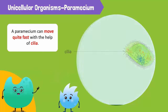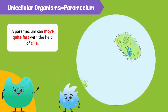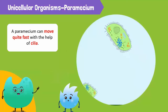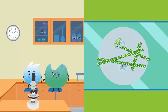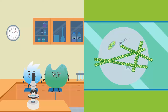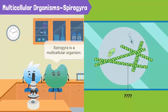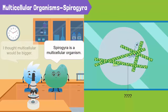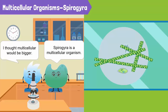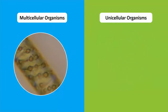I can see some green leafy strings as well, but they don't look like the others. Oh, that's spirogyra — it's a multicellular organism. I thought multicellular would be bigger!